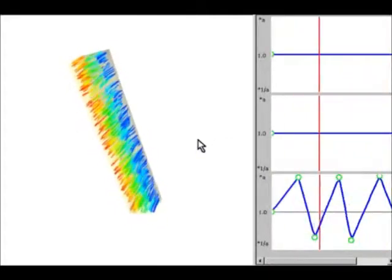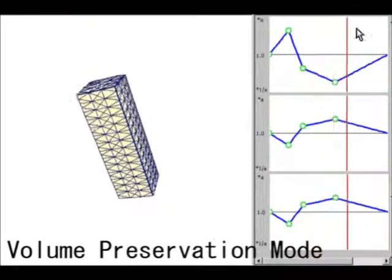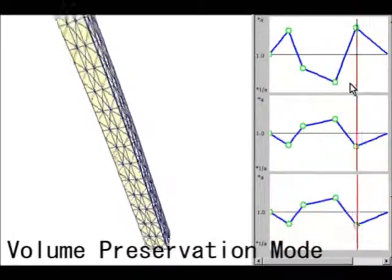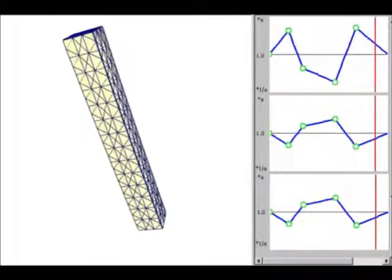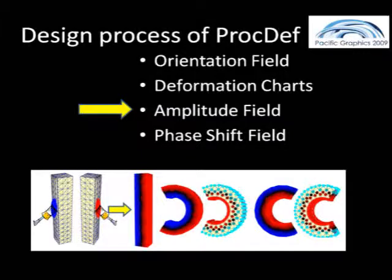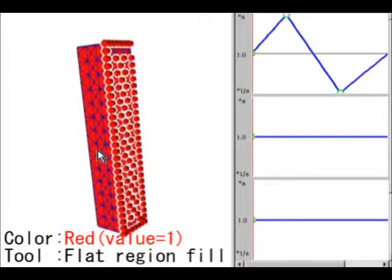In the volume preservation mode, the user can modify the top charts. The middle and bottom are automatically updated so that the local deformation preserves the original volume. The amplitude field supports control of the space-dependent magnitude of local deformations.